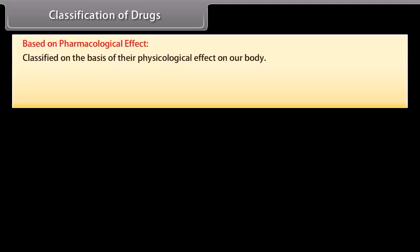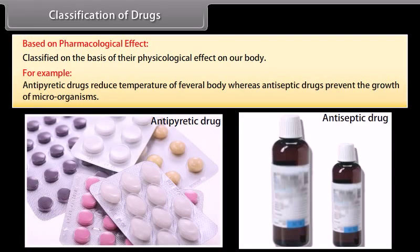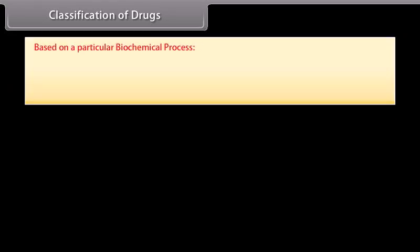Drugs can be classified in several ways. Based on pharmacological effect, drugs are classified on the basis of their physiological effect on our body. For example, antipyretic drugs reduce the temperature of a feverish body, whereas antiseptic drugs prevent the growth of microorganisms. Some drugs also affect biochemical processes in the body.